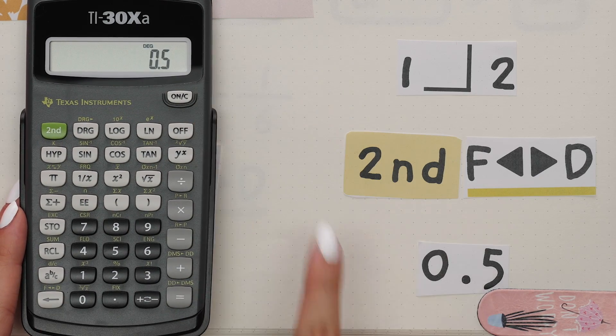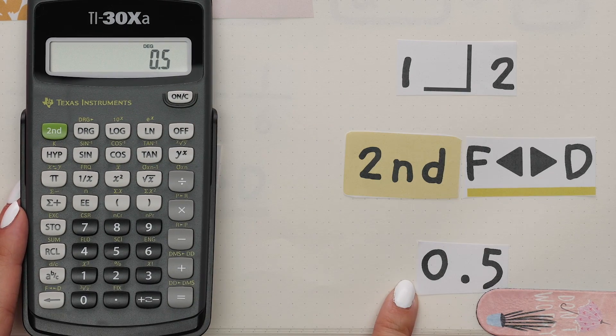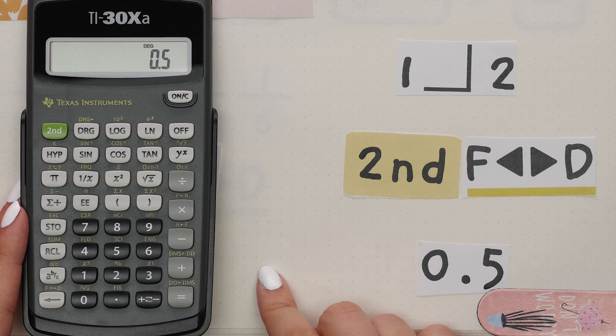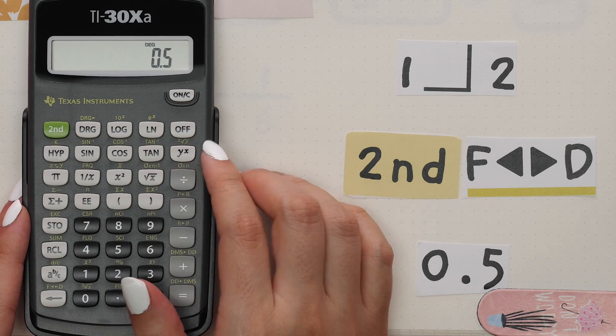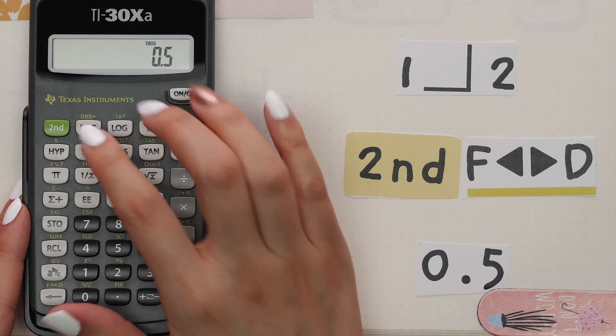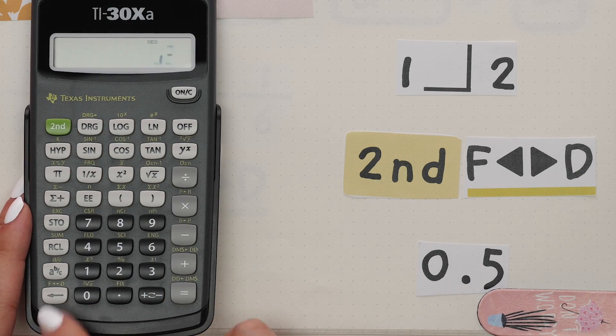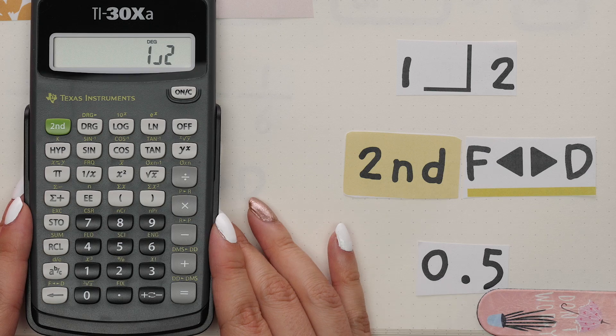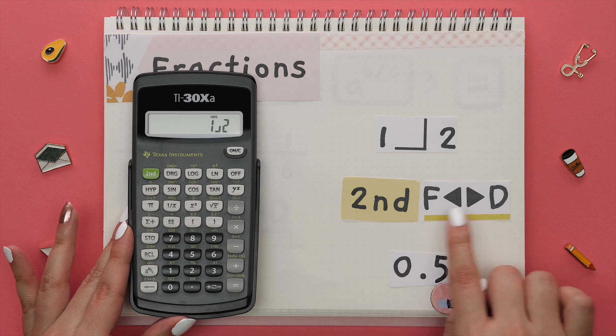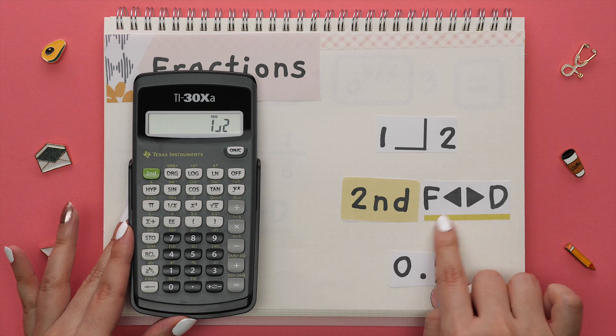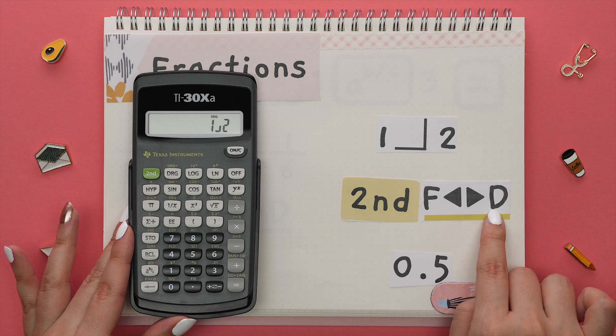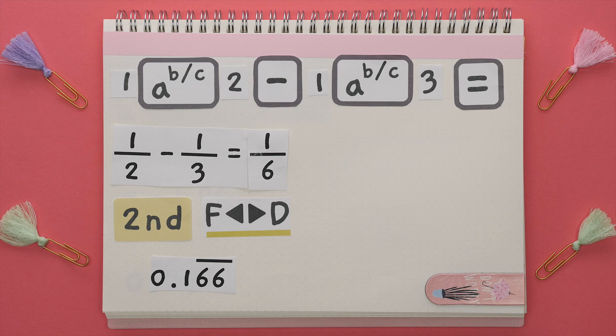To change this decimal back into a fraction, repeat what you just did — hit Second, then this button again. This symbol shows that you can keep going back from a fraction to a decimal and vice versa. This makes doing mathematical operations with fractions a lot easier.